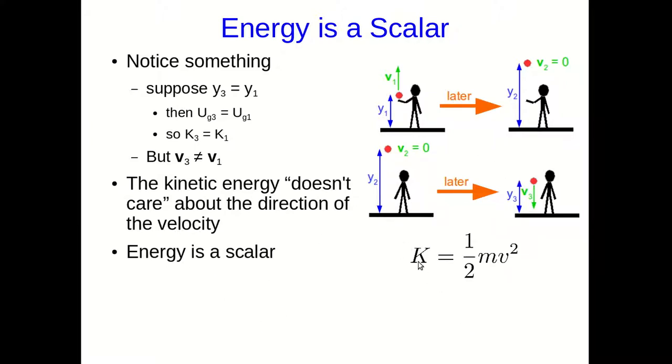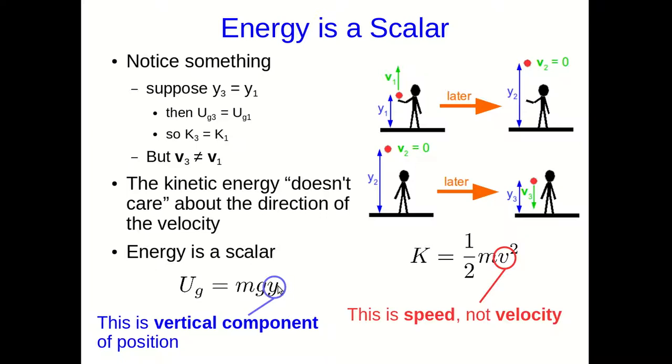And so the kinetic energy, when I write it this way, note there's no vector symbol on that V, and I haven't put anything in bold. This is a scalar expression. That V there is a speed, not a velocity. Similarly, when you look at the gravitational potential energy, that Y is not a position, which would be a vector. It's the vertical component of the position. And while vectors are made out of components, components themselves are scalars.